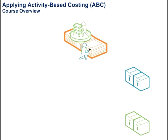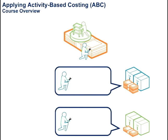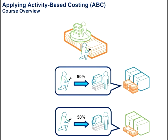Activity-Based Costing, ABC, is an alternative approach that assigns costs to products or other objects of interest according to their relation to activities that consume a firm's resources.